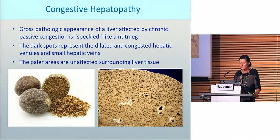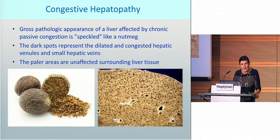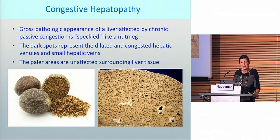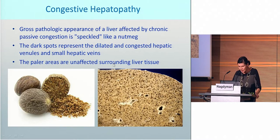What did we expect? We have to look at liver pathologies. You see here on the left side a typical nutmeg, and the gross pathology appearance of a liver affected by chronic passive congestion is speckled like a nutmeg — in German, Muskatnuss Leber. The dark spots represent the dilated and congested hepatic venules, and the paler areas are unaffected surrounding liver tissues.